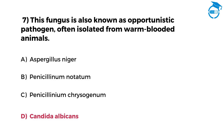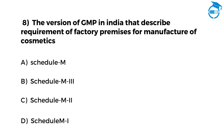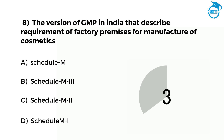Wow, you are participating really well in the test. Let us see if you can answer the next one. The version of GMP in India that described the requirement of factory premises for manufacture of cosmetics — option A Schedule M, option B Schedule M3, option C Schedule M2, option D Schedule M1. Your time starts now. The right option is C, that is Schedule M2.